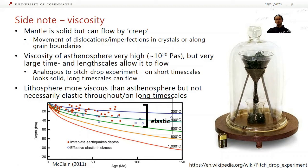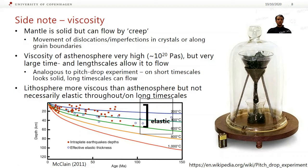The mantle is a solid — hopefully you've covered this in your geophysics courses — but it can flow through creep, which is a movement of dislocations or defects in crystals along grain boundaries. The viscosity of the asthenosphere is very, very high — around 10 to the 20 pascal seconds, which I've heard is similar to piano wire. But because of the time scales and length scales we're dealing with — the mantle is so big and we're dealing with geological time — it can actually flow. It's slightly analogous to the pitch drop experiment, where people leave a very viscous liquid like bitumen for 100 years or so. The slight difference is that these are solids deforming by creep, whereas pitch is just a very viscous liquid.